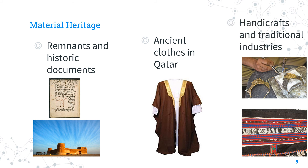Finally, we have handicrafts and traditional industries. These use the raw materials available in the Qatari environment. Examples include al-sadu handicrafts, traditional wooden items such as the wooden safe called al-mibiyat, and traditional heritage items like jewellery and copper coffee pots.